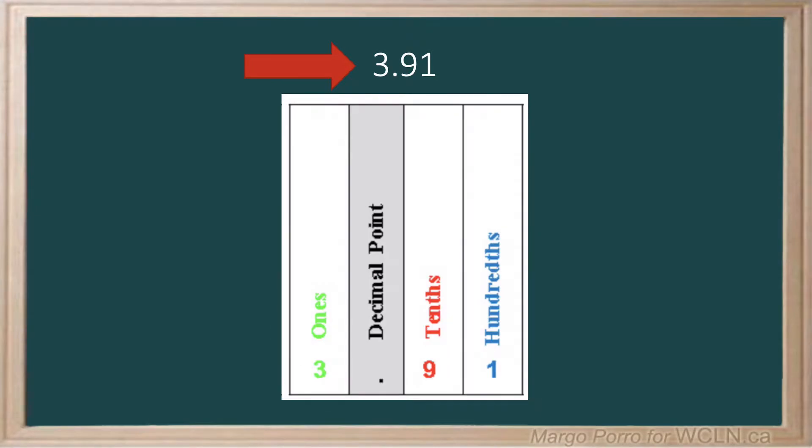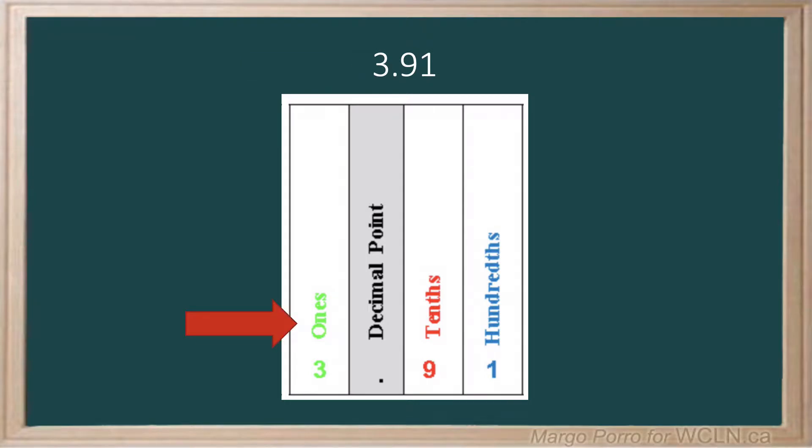Let's start with a place value chart. The 3 is in the ones place. 3 ones is simply written as 3.